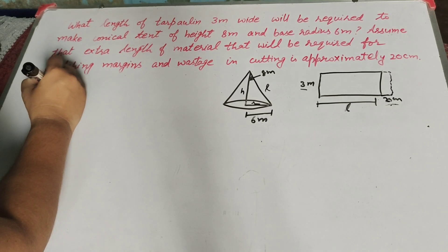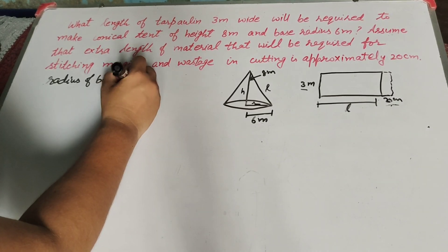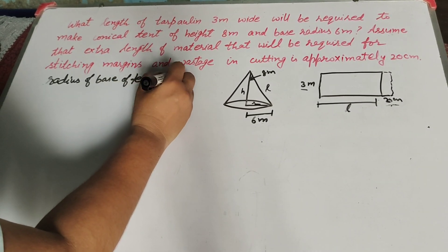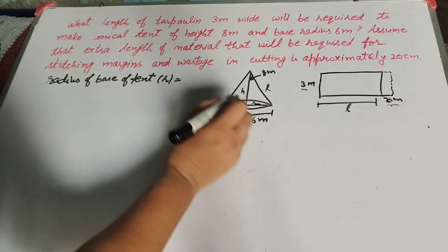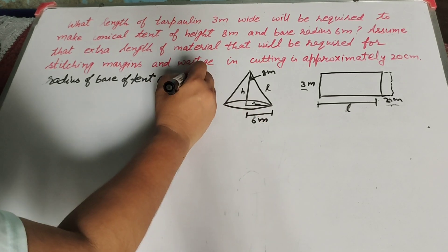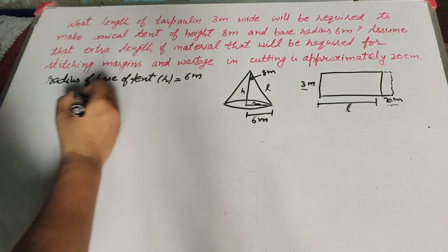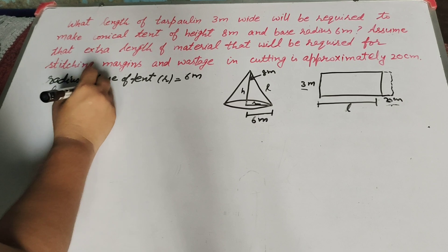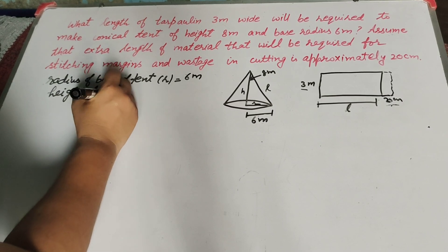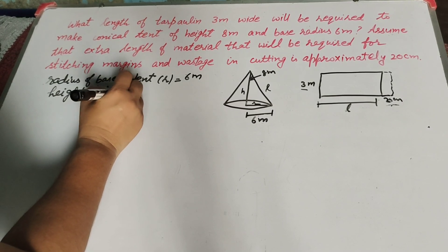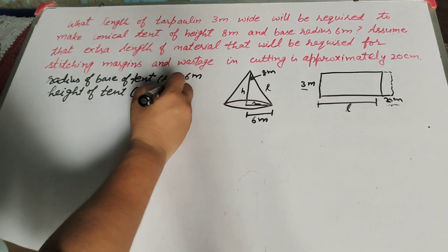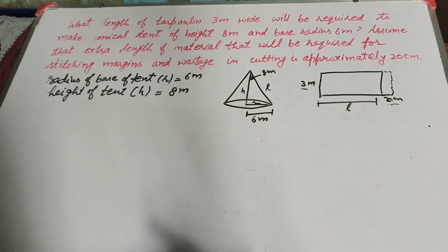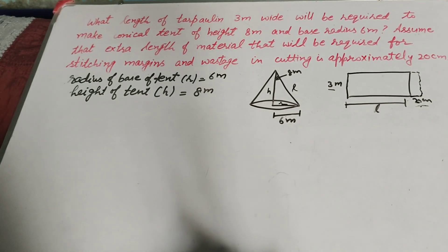Given: the radius of the base of the tent is r equal to 6 meter, and the height of the tent is equal to 8 meter.